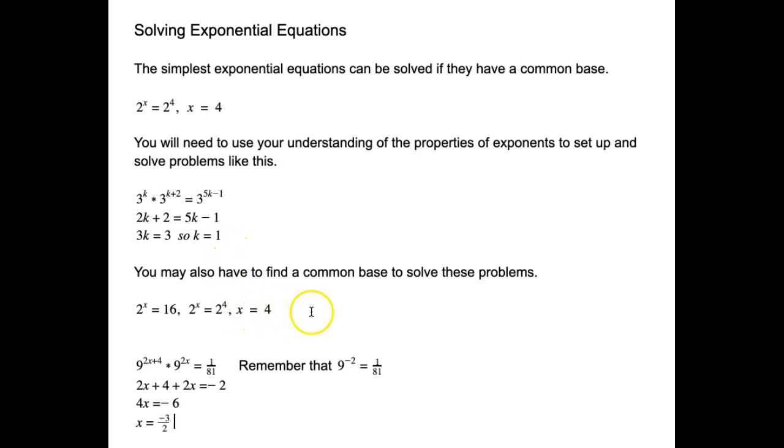Okay, sometimes having the common base won't be so obvious. If I have 2^x = 16, I'm going to have to remember that 2^4 is also equal to 16. So if I rewrite this as 2^x = 2^4, then I can easily see that x equals 4.